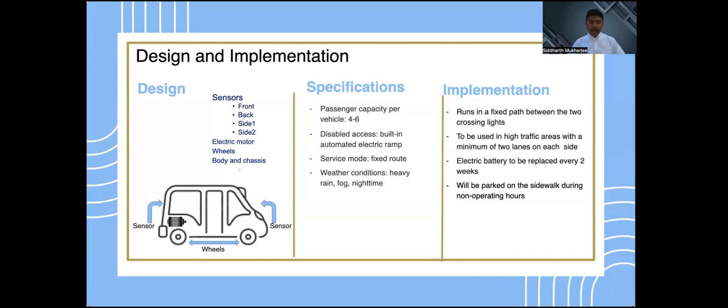Quick Cross will be battery powered and will include a hard body with basic sensors. It will run on wheels on a fixed path and in fixed directions, programmed to run at night in high traffic areas with a minimum of two lanes on each direction. The four sensors placed on either side and at the front and back will stop the shuttle from moving forward if it detects motion. Quick Cross will be electric battery powered to run 5,000 miles on a single charge and will be replaced every two weeks.